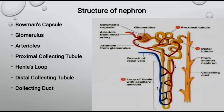Nephrons constitute Bowman's capsule, glomerulus, arterioles, proximal convoluted tubule, U-shaped Henle's loop, distal convoluted tubule, and collecting duct. The glomerulus is a tuft of capillaries present inside a cup-shaped structure called Bowman's capsule.